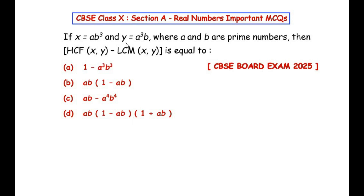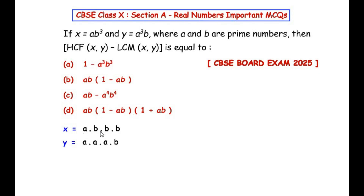Let us begin by writing x and y in the expanded format. x can be written as a times b times b times b. In a similar way, y can be written as a times a times a times b. Now once we have got x and y in this format, let us focus on finding the HCF.